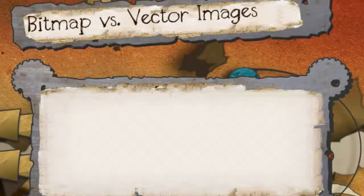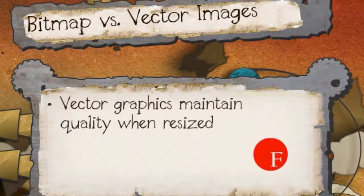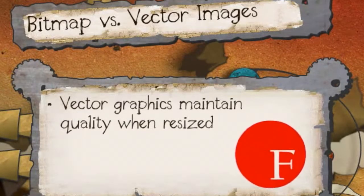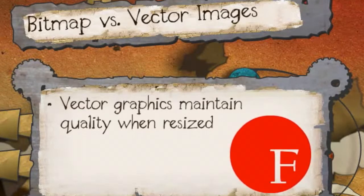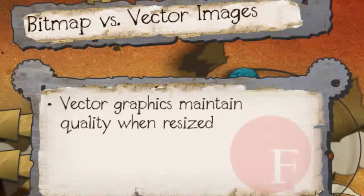Now, vector graphics, on the other hand, will stay the same quality no matter how big you make them, no matter how far you zoom in. That is the advantage that vector graphics have over bitmaps - they remain clean and sharp the entire time.